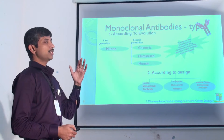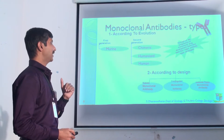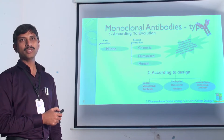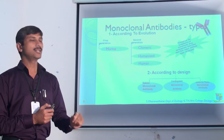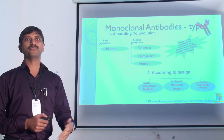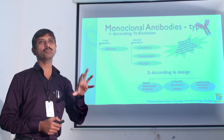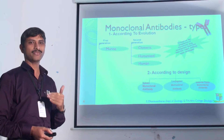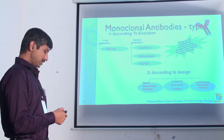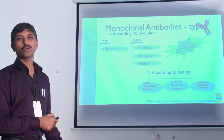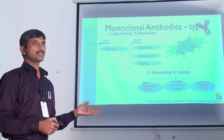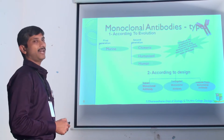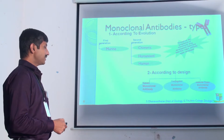Monoclonal antibody types can be classified according to evolution. Throughout the progression of monoclonal antibody development there have been four major types: murine, chimeric, humanized, and human. Murine is nothing but mouse or rat. Initially, antibodies were produced from mammalian systems — mostly laboratory rats like albino or Wistar rats or mouse. These are mostly of polyclonal type, with lower specificity compared to second generation antibodies.